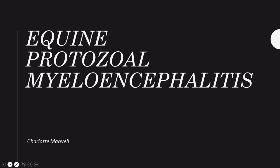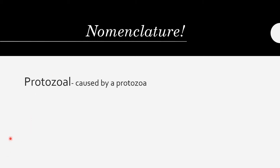So let's break it down, starting off with nomenclature — what's in a name? Equine: obviously it infects horses. And the next key part is protozoal, meaning that it's a protozoa. So the same way that a disease could be caused by a bacteria, a virus, or a rickettsia, this one is caused by a protozoa.